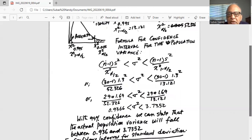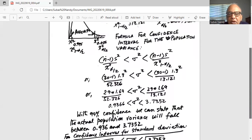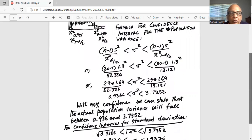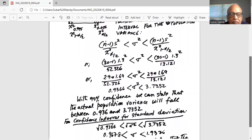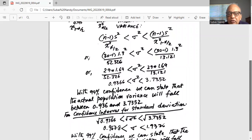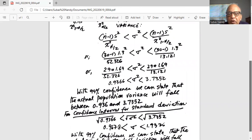is 29 times 1.69 divided by 13.121. So the lower boundary of the variance is 0.936 and the upper boundary of the variance is 3.7352. With 99% confidence we can state that the actual population variance will fall between 0.936 and 3.7352.